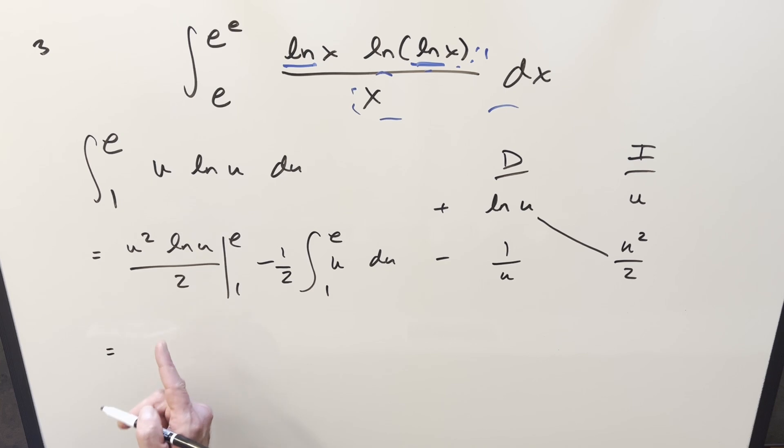So we'll evaluate this first. We're going to get, plugging in, we're going to get e². ln e is just 1 over 2 for the first part. Second part, plug in a 1. We've got 1², but ln 1, that's just 0. This doesn't matter, so this piece goes away.